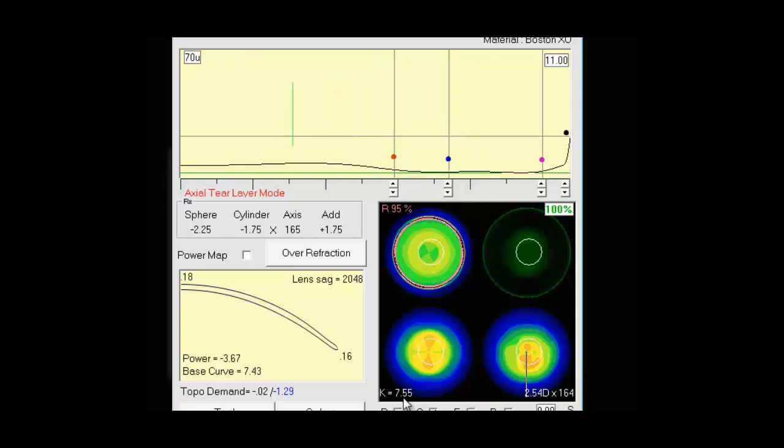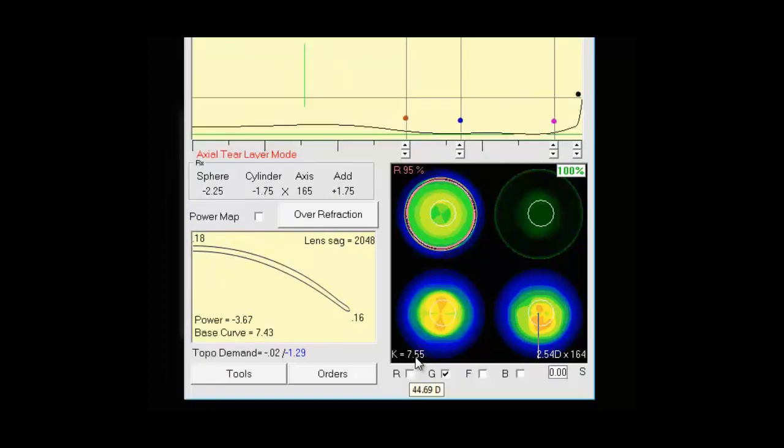In the lower left we have K equals 755. That's the average K. And if you hover over it it will show you in diopters as well. And on the lower right we have the corneal cylinder. These are great references to have as you're designing your lens.